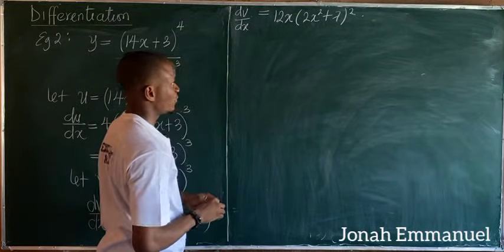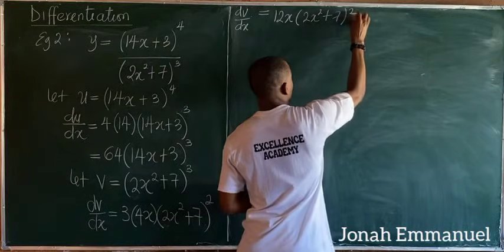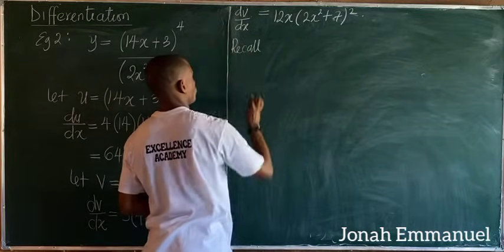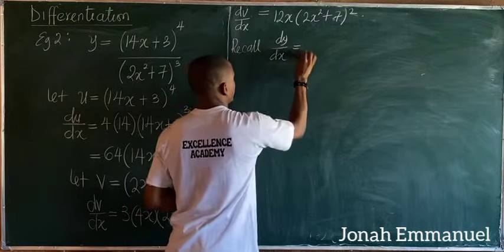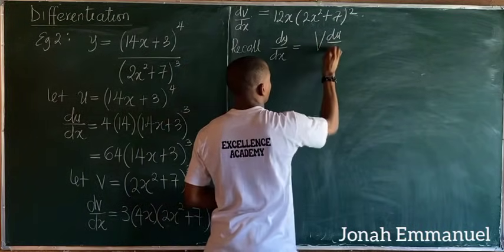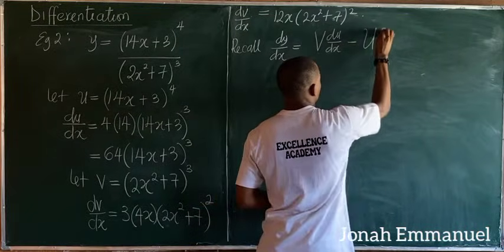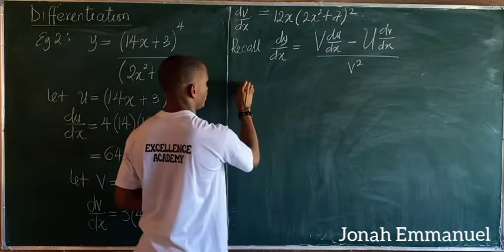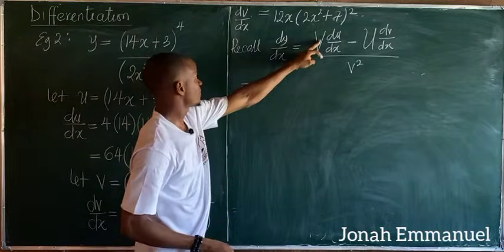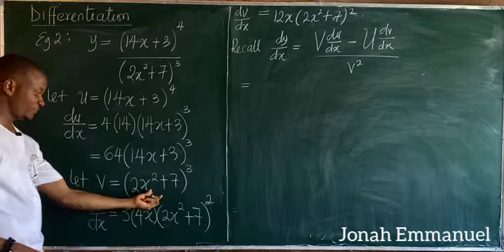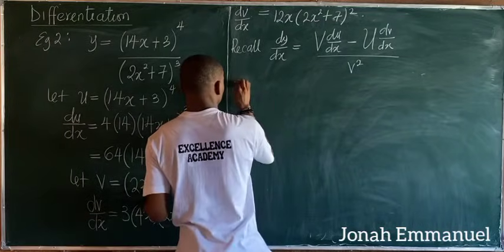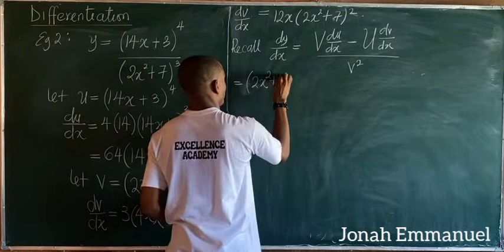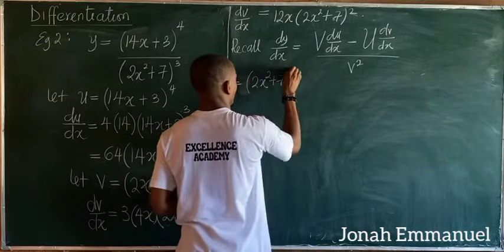At this point, recall the quotient rule formula: dy/dx equals v·(du/dx) minus u·(dv/dx), all over v squared. Now substituting values, v is (2x² + 7) all to the power 3.